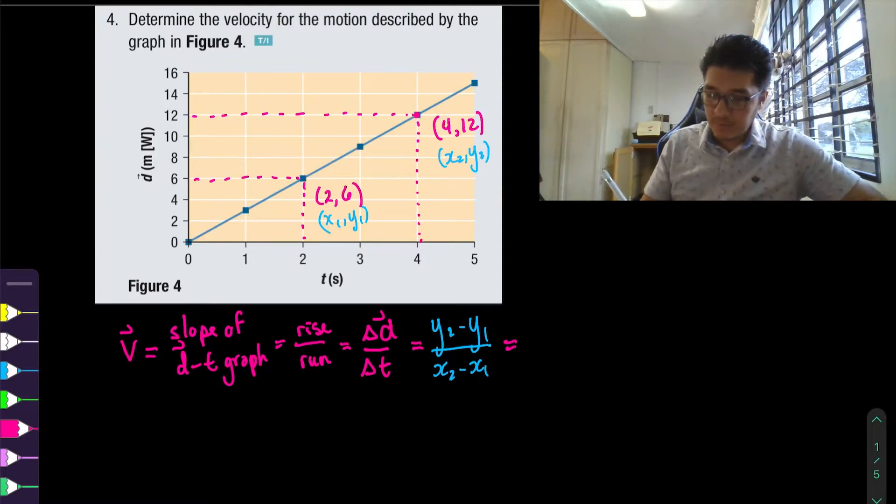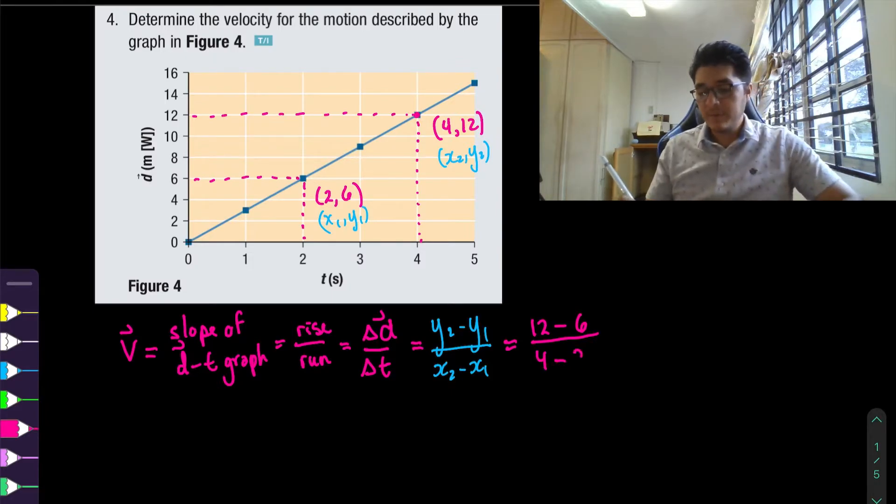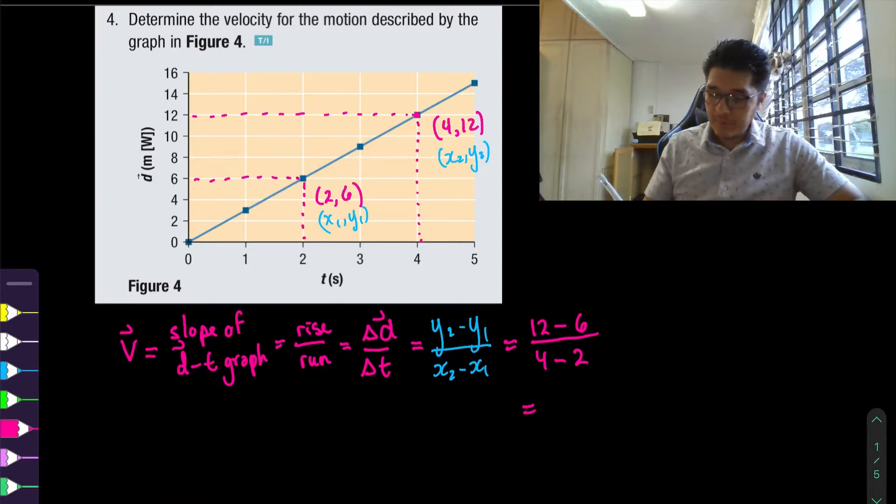So y2 is 12, y1 is 6, x2 is 4, x1 is 2. So now we could just perform the calculation. So 12 minus 6 is 6, 6 goes on top, 4 minus 2 is 2.